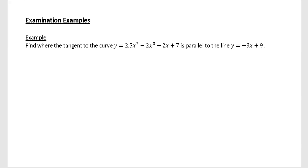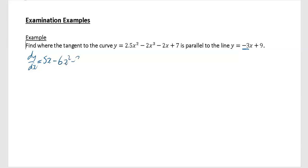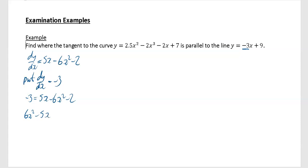The first thing to notice is 'parallel to this line' means your gradient is going to be equal to minus 3. So we need to find the gradient of our curve by differentiating. If you differentiate you get 5x minus 6x squared minus 2. Setting dy/dx equal to minus 3 gives us: minus 3 equals 5x minus 6x squared minus 2, which rearranges to 6x squared minus 5x minus 1 equals 0.